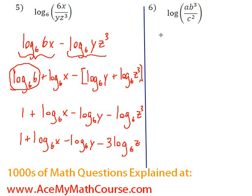Now let's continue with number 6. We can do the same thing I did over here. I can go log of ab cubed minus log c squared. Since we're dividing them, I can just subtract the logs.